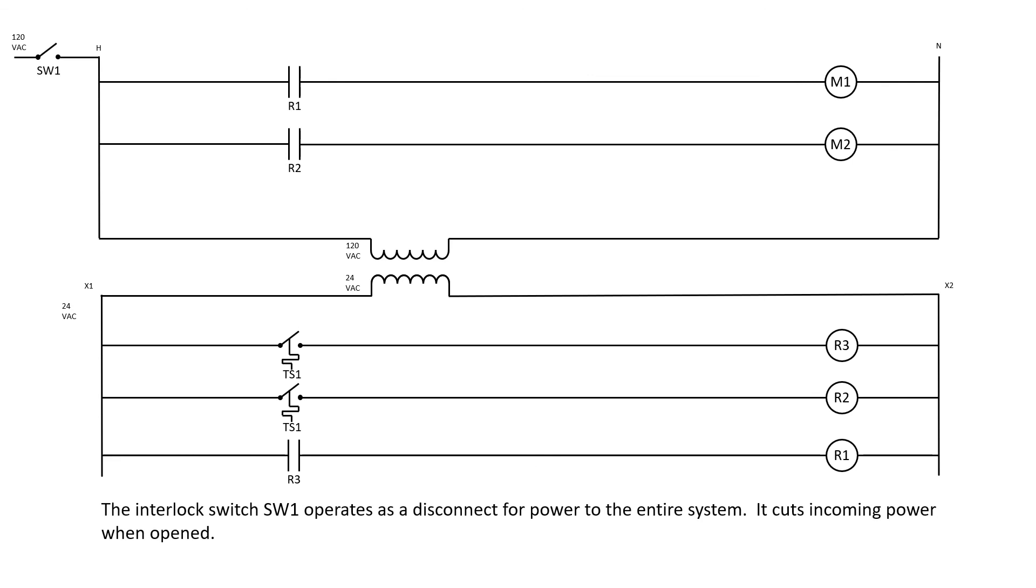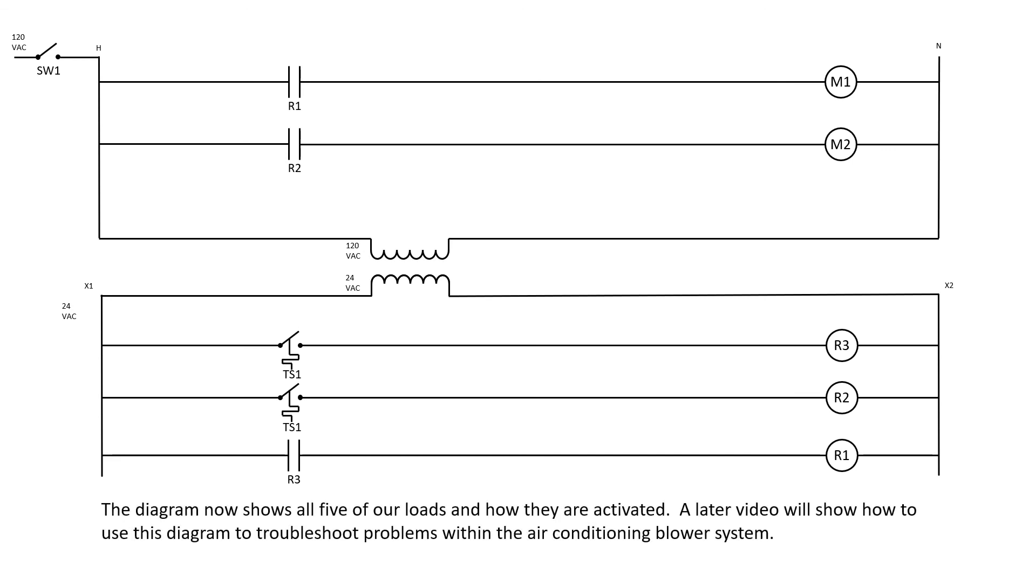The interlock switch SW1 operates as a disconnect for power to the entire system. It cuts incoming power when opened. The diagram now shows all five of our loads and how they are activated. A later video will show how to use this diagram to troubleshoot problems within the air conditioning blower system.